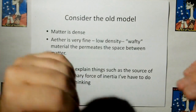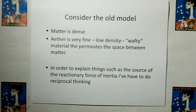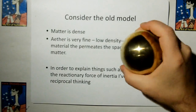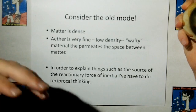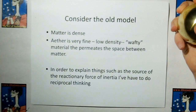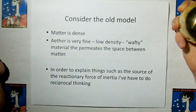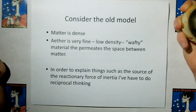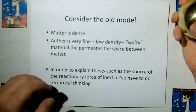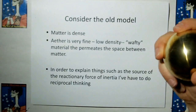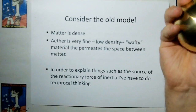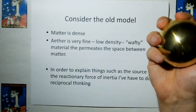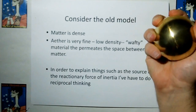Consider the old Ether model. They said that matter is dense and heavy. Ether is very fine, low density, wafty — material that permeates the space between matter. But in order to explain things like the source of the reactionary force of inertia, or even why is this thing heavy, how could it be heavy if it's all inertialess particles? What makes it heavy?